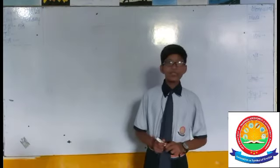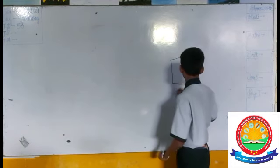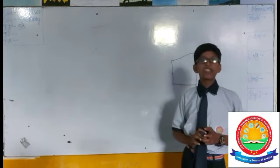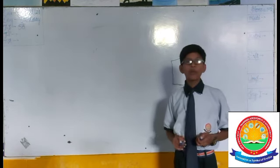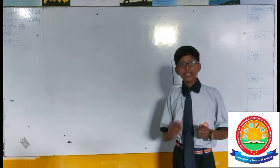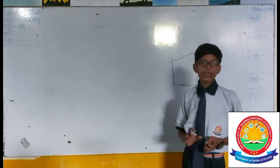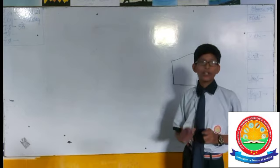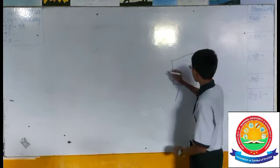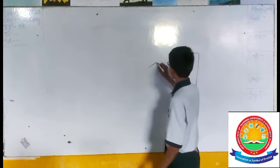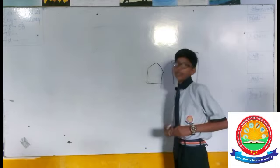For example, square. Square has all sides equal and all angles equal to 90 degrees. Another example is pentagon. The regular pentagon has all sides equal. Thank you.